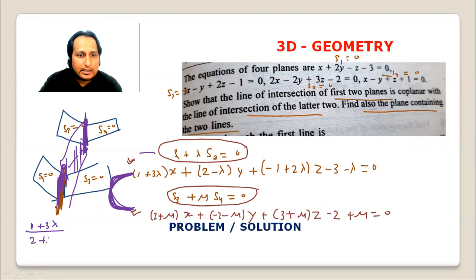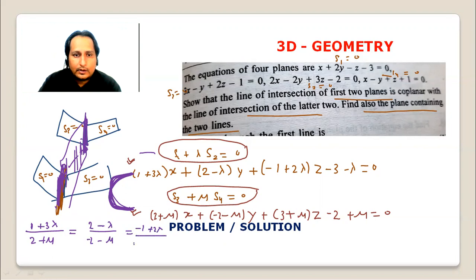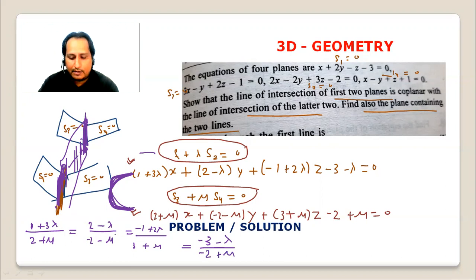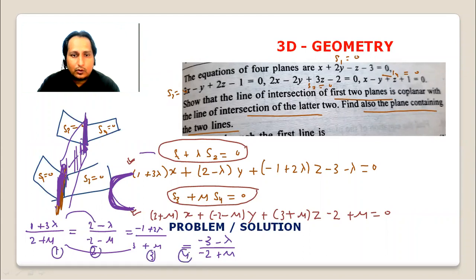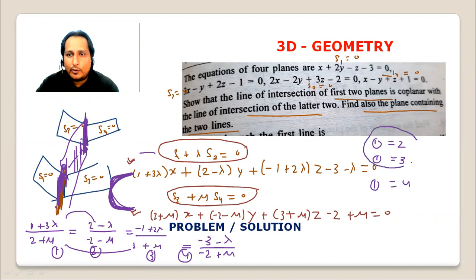We have two plane equations and we need to set up ratios of corresponding coefficients. Equating ratios: (1 plus 3 lambda) upon (2 plus mu) equals (2 minus lambda) upon (minus 2 minus mu) equals (minus 1 plus 2 lambda) upon (3 plus mu) equals (minus 3 minus lambda) upon (minus 2 plus mu). This gives us equations in two variables lambda and mu. We solve equations one and two, and then verify with equations three and four, to calculate lambda and mu.